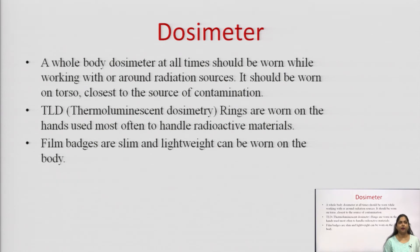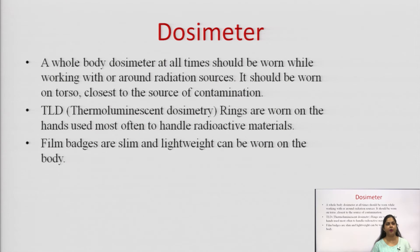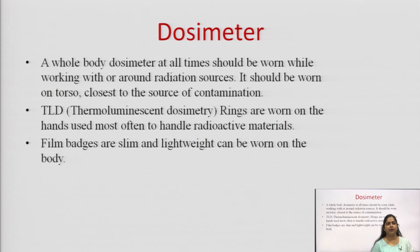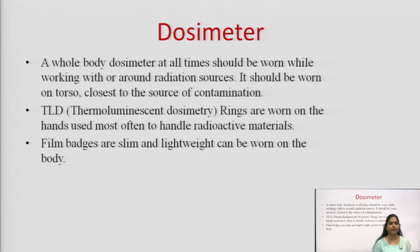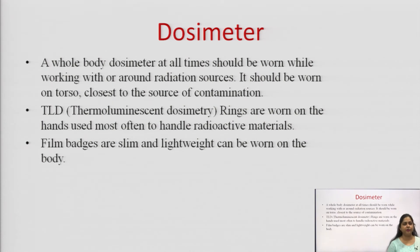A whole body dosimeter is to be worn while working with radiation sources. Those continuously working with radioactive compounds are provided with different types of dosimeters. These dosimeters can be worn on the torso area or closest to the source of contamination — on the fingers, wrist, or as a card on the torso. Thermoluminescent dosimeters are worn as rings on the hands, since hands are often the most exposed when handling radioactive material.